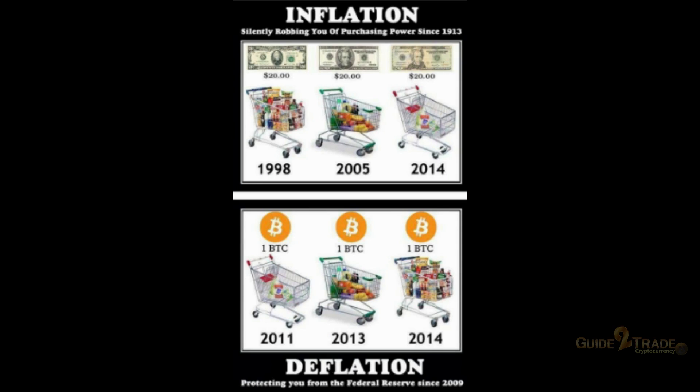Let me show you an image to illustrate the difference between fiat currency and cryptocurrency. The value of fiat currency is gradually going down and we are getting less with its exchange, whereas it's the reverse in the case of cryptocurrency — day by day the value is going up and we are getting more and more out of it.